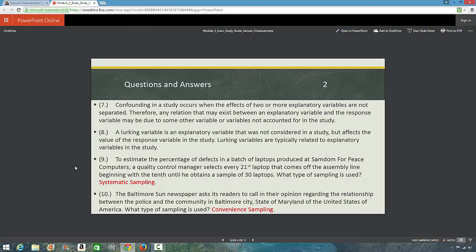Question 10. The Baltimore Sun newspaper asks its readers to call in their opinion regarding the relationship between the police and the community in Baltimore City, state of Maryland of the United States of America. What type of sampling is used? It is convenience sampling.